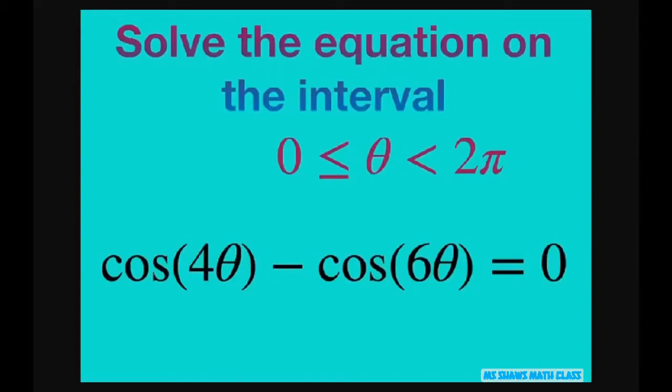Hi everyone. We're going to solve the equation on the interval 0 to 2π: cosine of 4θ minus cosine of 6θ equals 0.